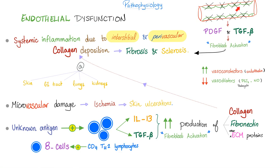Endothelial damage releases platelet-derived growth factor and TGF-beta, activating the fibroblast. The vessel is getting narrower, causing ischemia. Why? Endothelial dysfunction increases vasoconstrictors such as endothelin, but decreases vasodilators such as nitric oxide and prostaglandin I2 — the prostacyclin — which keeps the blood cycling.